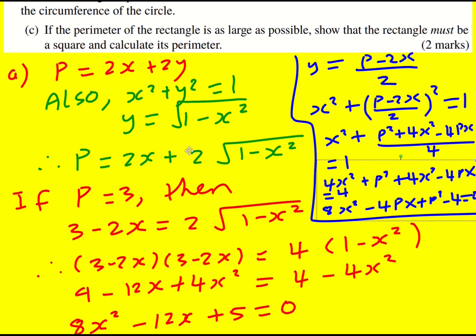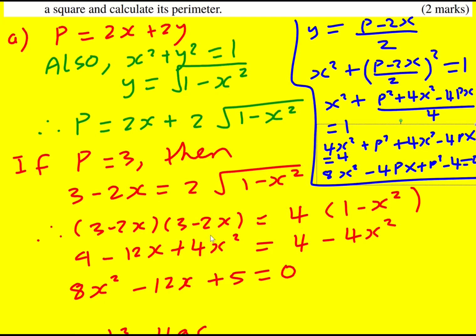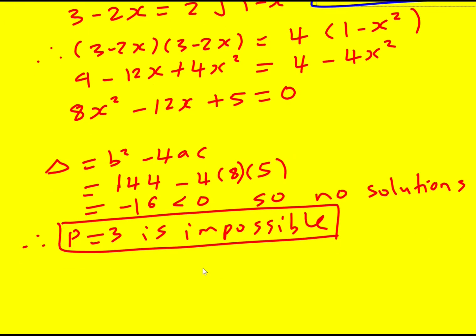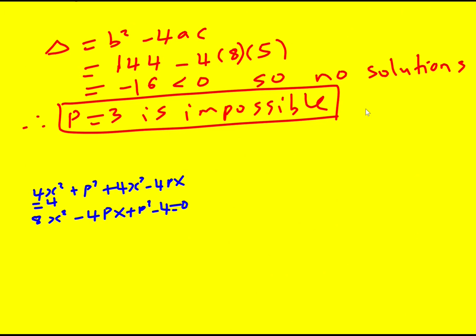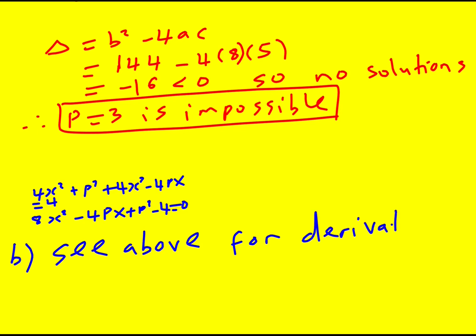Rearranging and expanding gives the same general quadratic: 8x squared minus 4px plus p squared minus 4 equals 0. I was initially unsure how the discriminant would help find a maximum, but we just need to ask: for which values of p does a solution in x exist? For solutions of x to exist, the discriminant must be greater than or equal to 0.